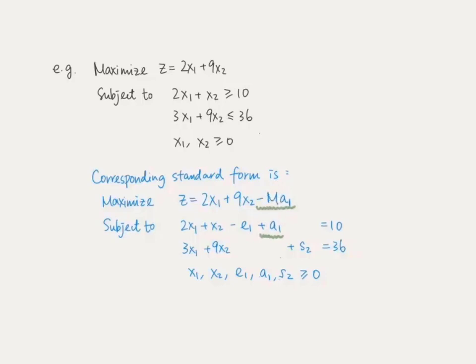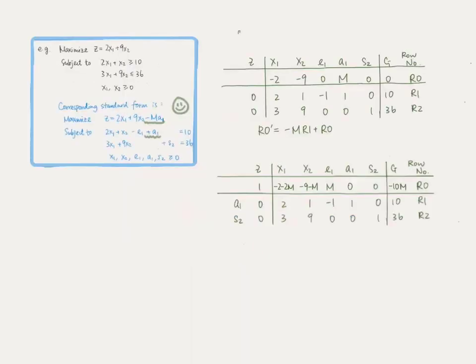We imagine that capital letter M is a very huge positive constant — let's say 1 billion. Since a1 is non-negative, if we choose a1 to be any positive value, subtracting a huge positive number times a1 will make z very negative. Therefore, in order to maximize z, we would take a1 to be equal to 0 in the final solution, so it won't affect the left-hand side of constraint 1. By doing this, we can keep a1 in the system to provide the basic variable needed for row 1, and at the same time force a1 to be 0 when we reach the optimal solution.